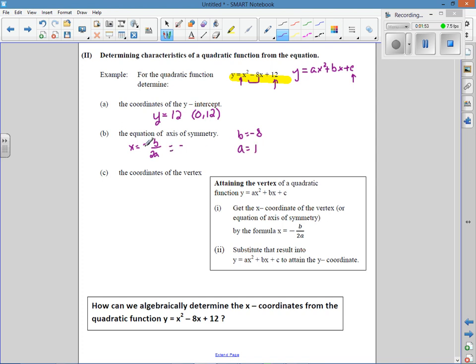So negative is already here. Negative 8 over 2 times 1. Negative times a negative is a positive 8 over 2, or 4. So our axis of symmetry is x equals 4.